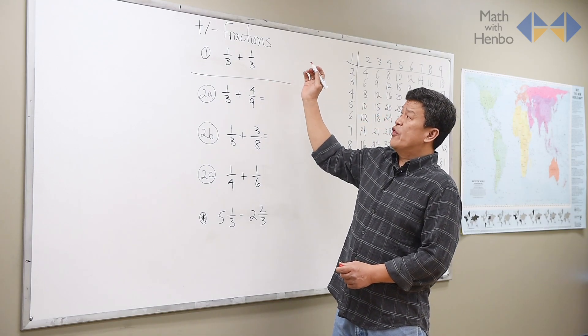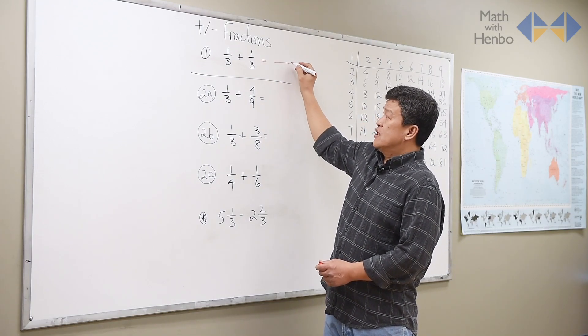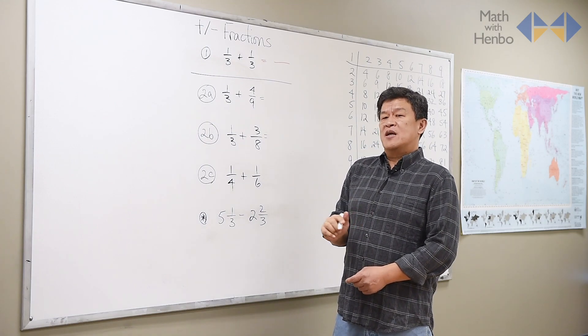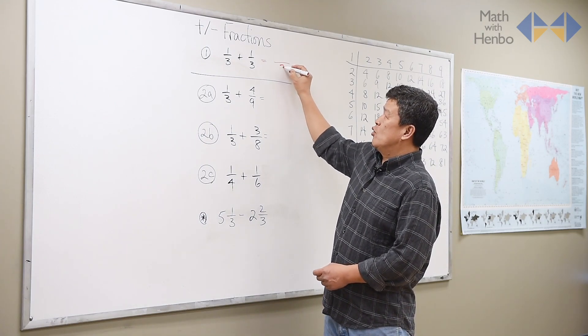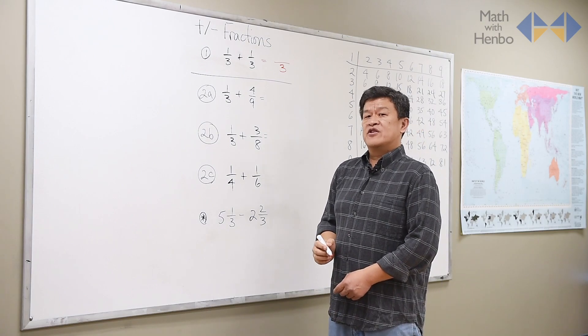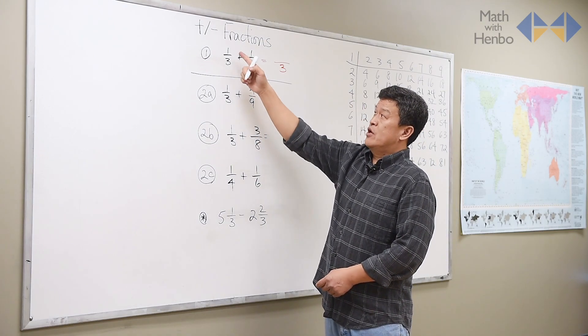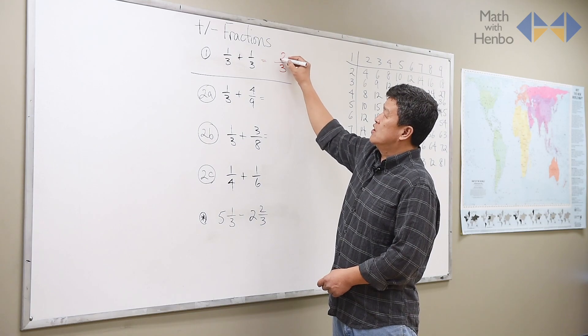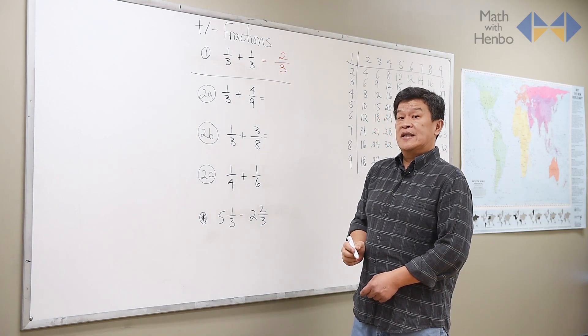So when we do one-third plus one-third, what we're going to do is essentially leave the bottom alone. We do not add size. If you want two pairs of jeans and you're size 34, you don't want 68. So here, you just add one plus one, which gives us two-thirds. That's it.